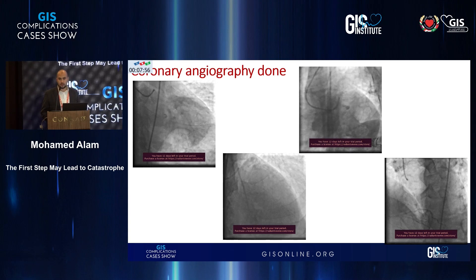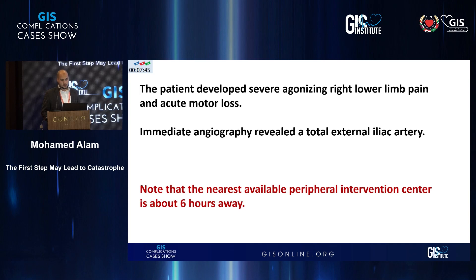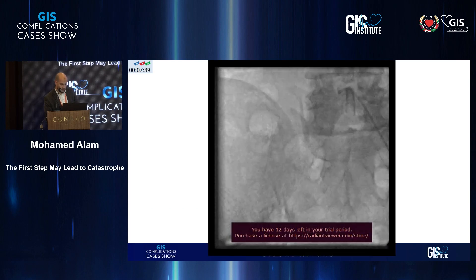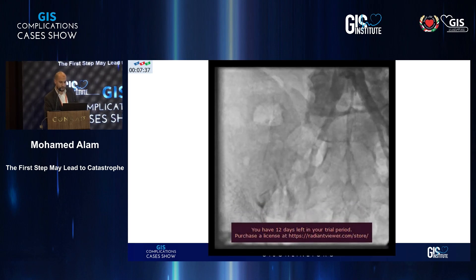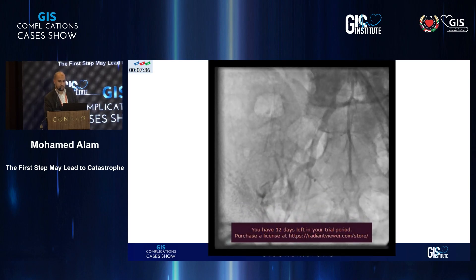After performing coronary angiography, the patient complained of severe agonizing right lower limb pain and acute motor loss of function. So we performed an immediate repeat angiography of the right lower limb, which showed total occlusion of the external iliac artery.